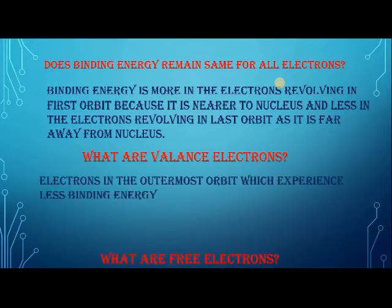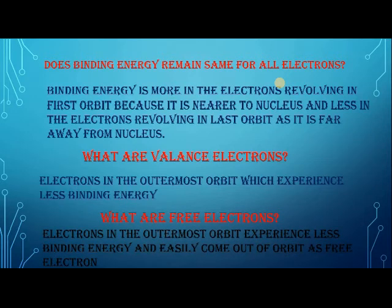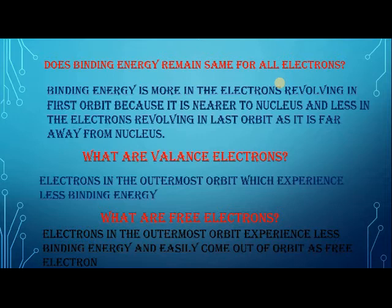What are valence electrons? Electrons in the outermost orbit which experience less binding energy are called valence electrons. In copper, we have one electron in the last shell — that is the valence electron. What are free electrons? Electrons in the outermost orbit experience less binding energy and can easily come out of the orbit as free electrons. In copper, the valence electron is far from the nucleus, so the binding force on it is less, and it can easily come out as a free electron.